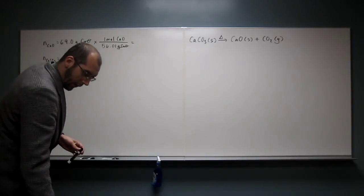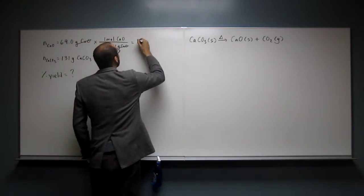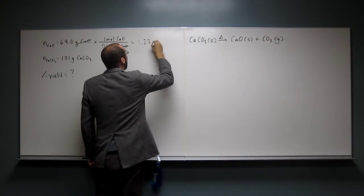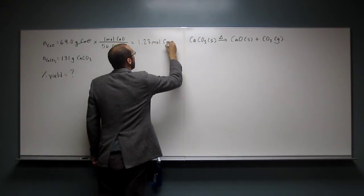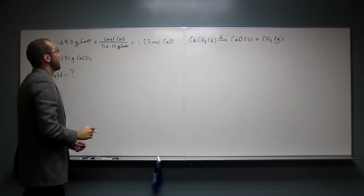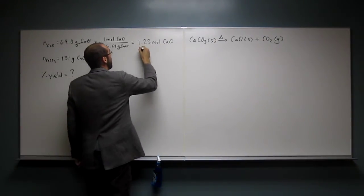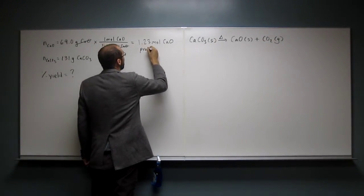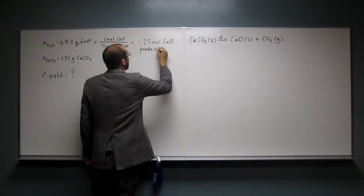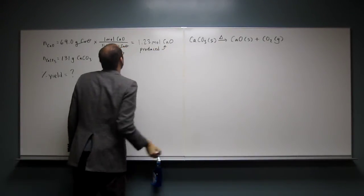So I get 1.23 moles of calcium oxide. That's how much we produced. This is how much was produced in the reaction.